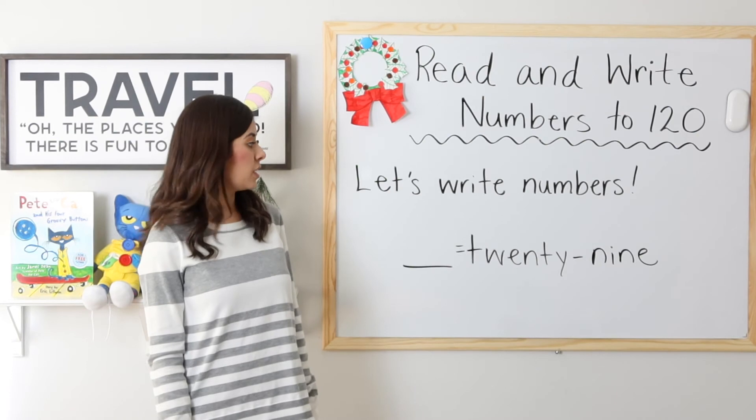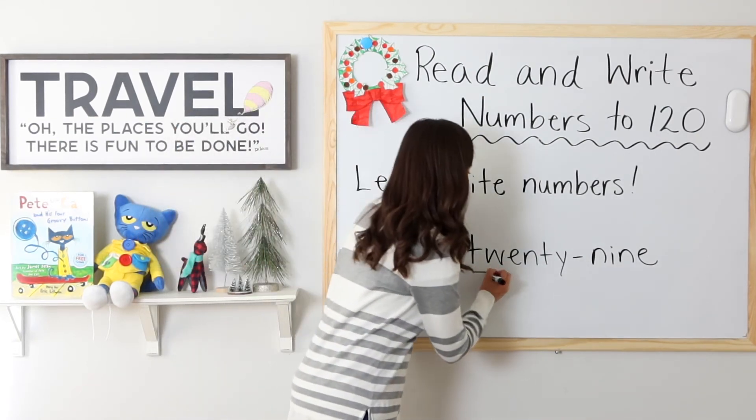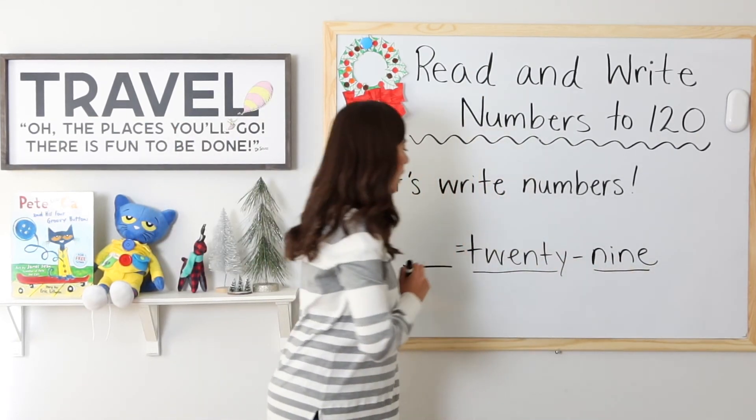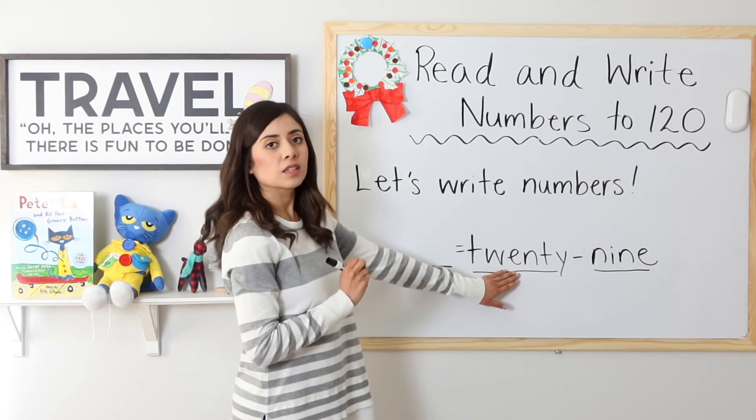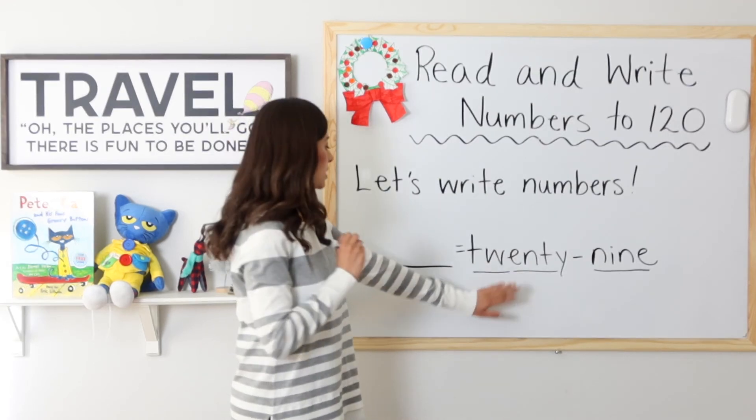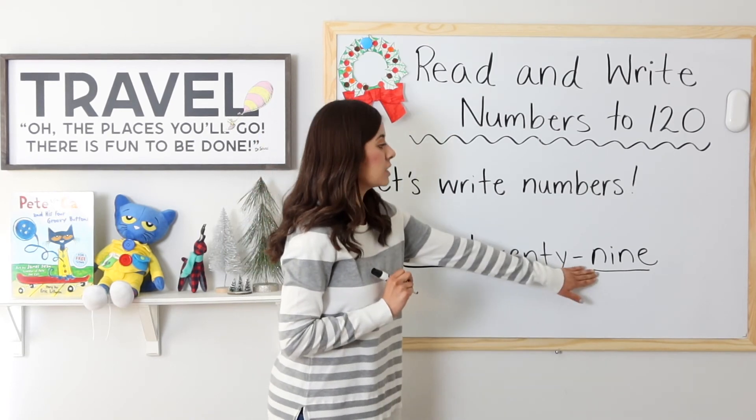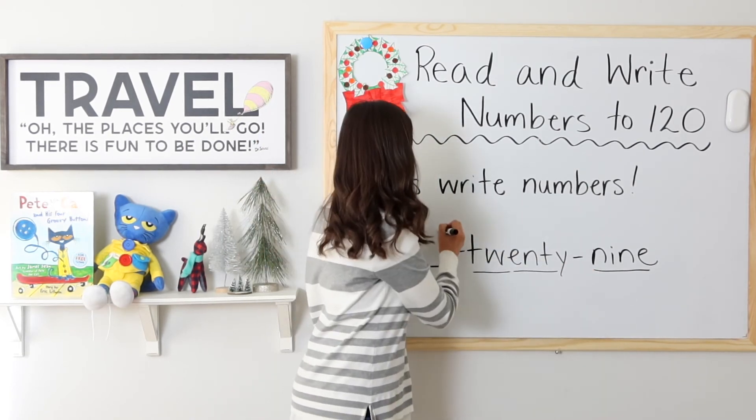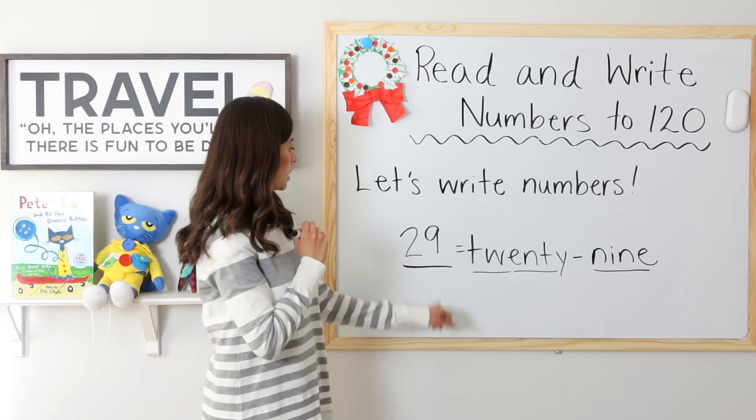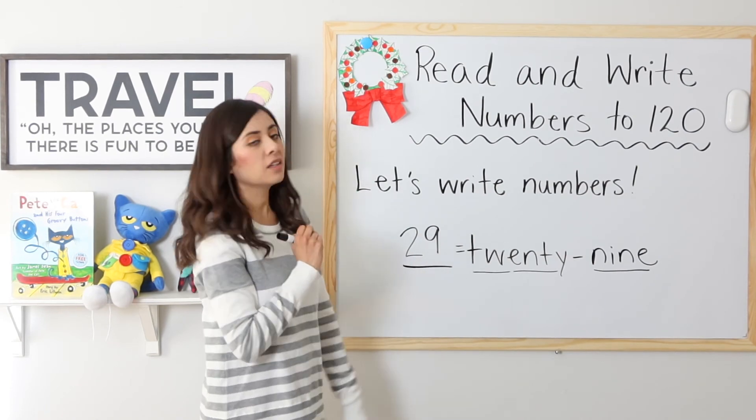29. So I have 29. How many tens is that? 20 is two tens. Two tens. How many ones? Nine. Nine in the ones place. 29. Awesome job.